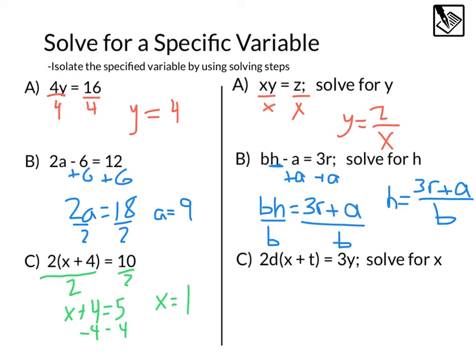Looking at our literal equation, we have 2D times x plus T. Just like we did before, we're going to start by dividing the multiplier out, which in this case is 2D. That's going to leave us with x plus T equals 3Y over 2D.